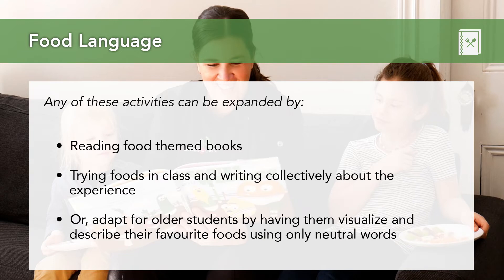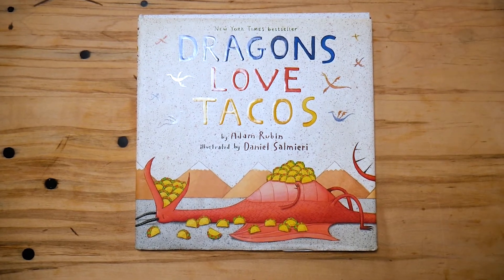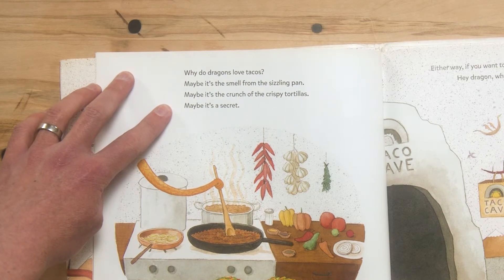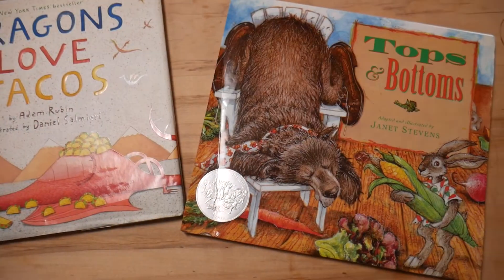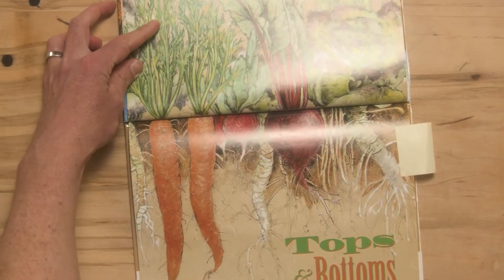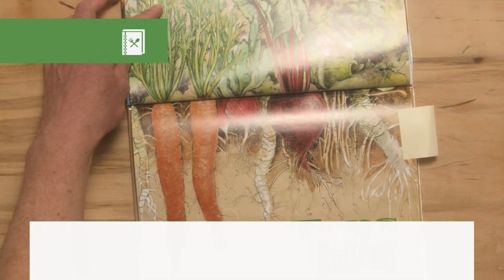For kindergarten and primary age students, reading food themed books can also be a great accompaniment to this activity. Two of our favorite books we'd like to recommend are Dragons Love Tacos by Adam Rubin — we love this book because of its use of language around foods throughout — and Tops and Bottoms by Janet Stevens, which we love because the plot is driven by the different ways that fruits and vegetables grow.